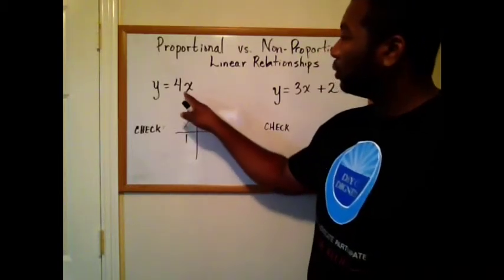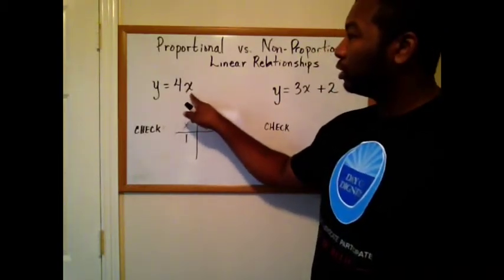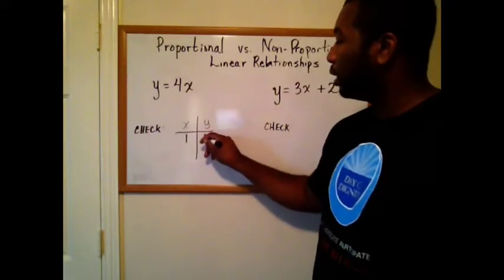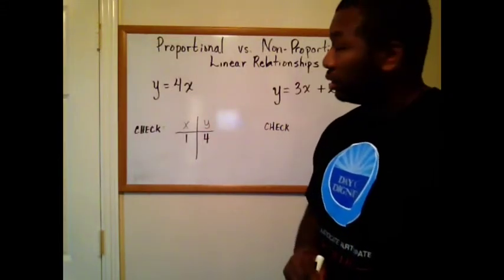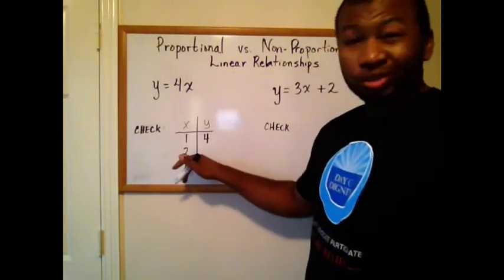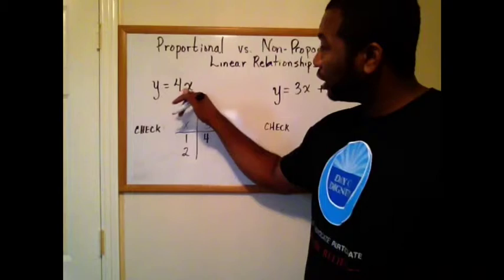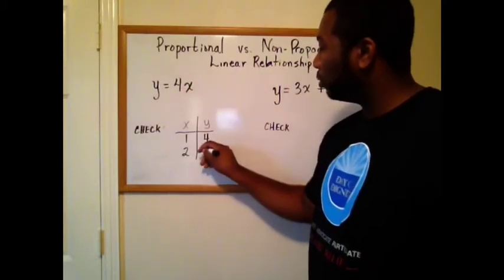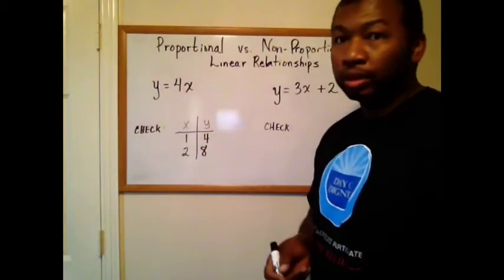One. So when x is one, four times one gives me four. When x is one, y is four. Why not try two? When x is two, four times two gives me eight. Y equals eight.